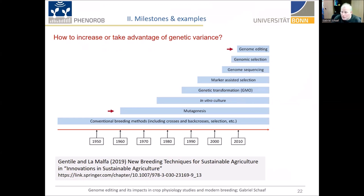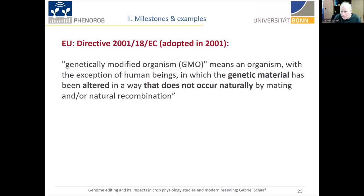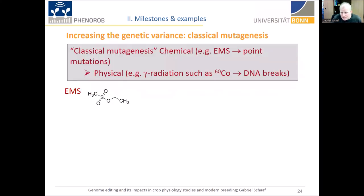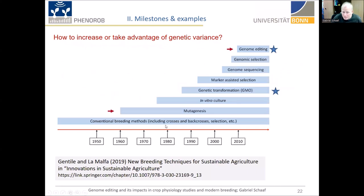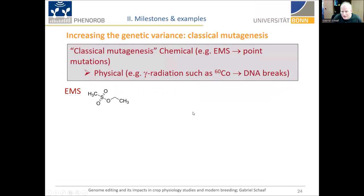I want to talk about two particular breeding milestones: one is mutagenesis, or mutation breeding, as it is also called, which breeders have been doing since the 1950s. The other one is genome editing. Genome editing, in some parts of the world, is considered GMO technology — genetically modified organisms. I want to briefly tell you how genetically modified organisms is defined by the European Union: 'Genetically modified organism means an organism, with the exception of human beings, in which the genetic material has been altered in a way that does not occur naturally by mating and/or natural recombination.'